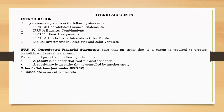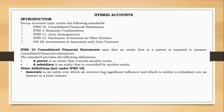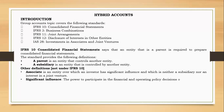There is also something called an associate. An associate is an entity over which an investor has significant influence — the keyword being significant influence — and which is neither a subsidiary nor an interest in a joint venture. When you have control, it's obvious you have significant influence. But significant influence does not necessarily mean you have control or joint control. Significant influence refers to the power to participate in the financial and operating policy decisions of an investee, but it is not control or joint control.